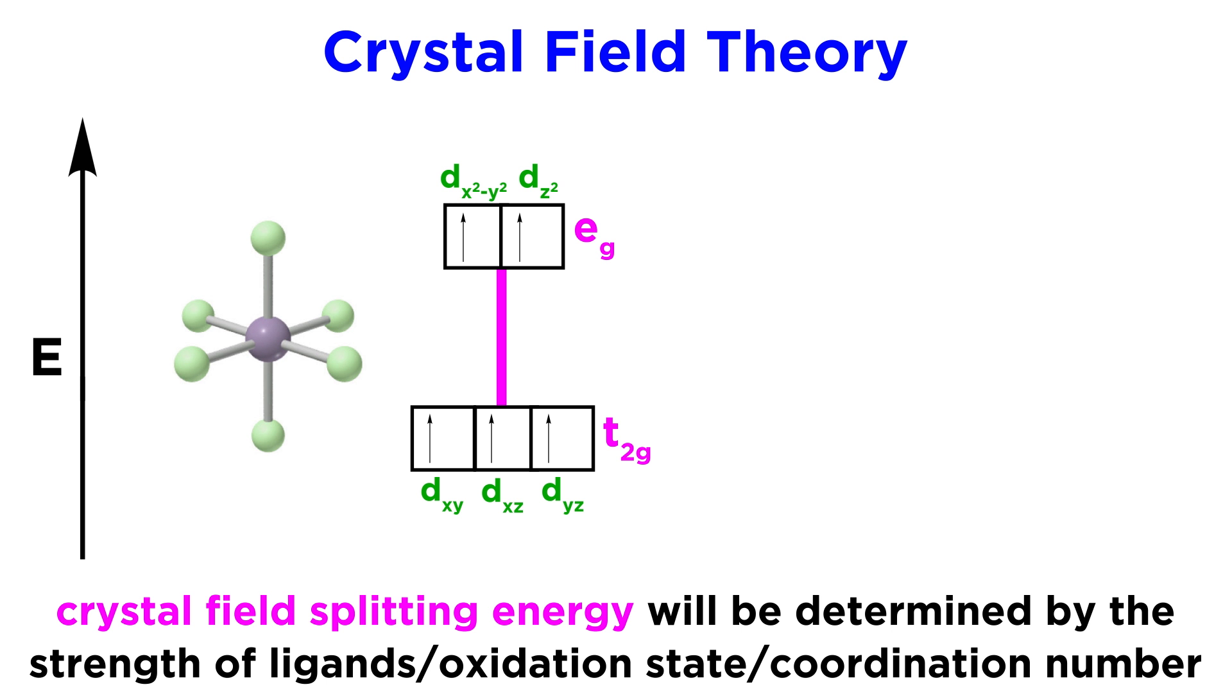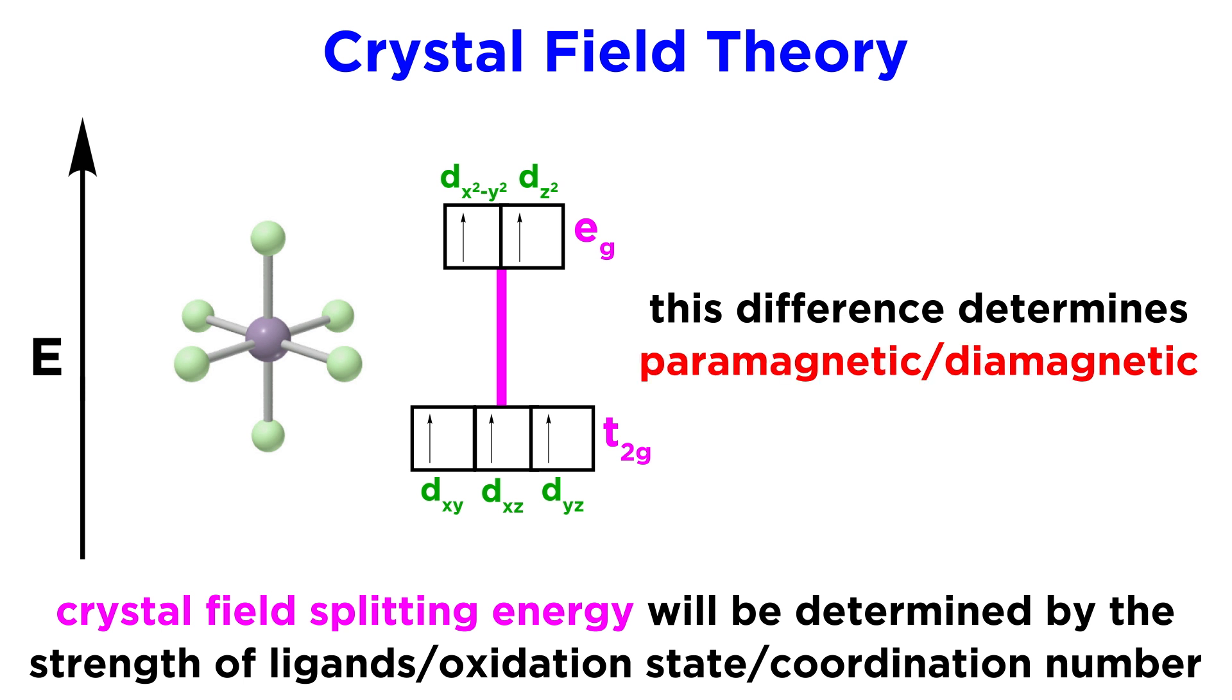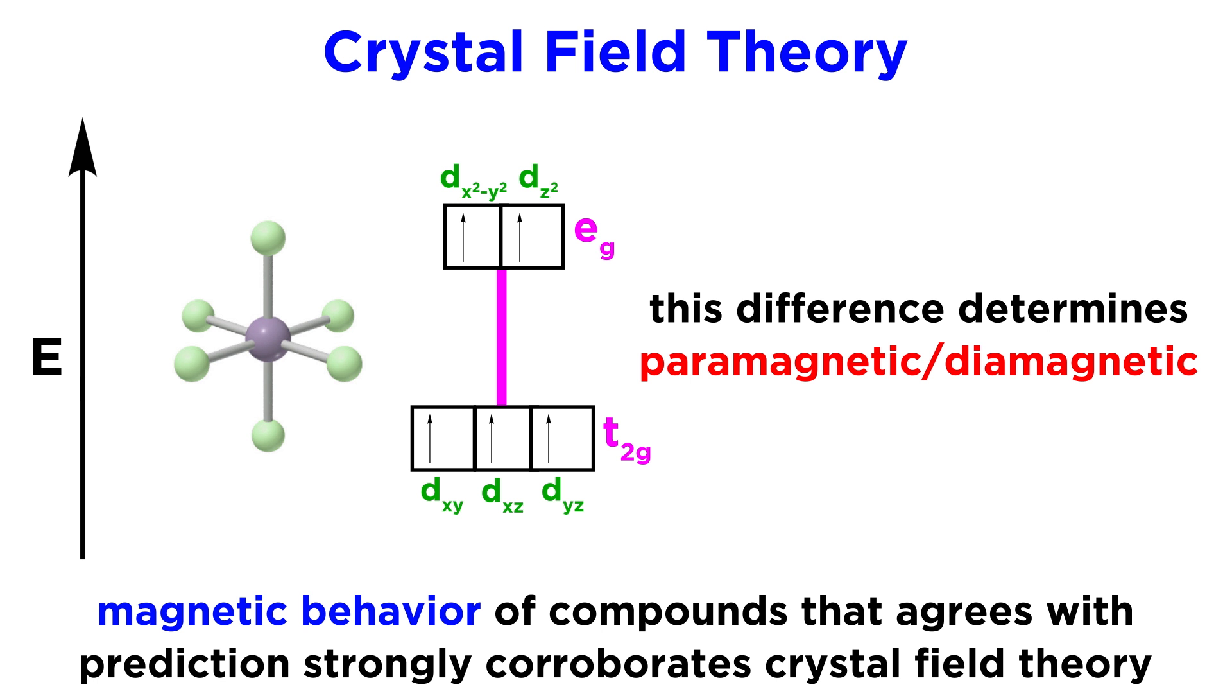The strength of the ligands surrounding the metal atom, along with other factors like oxidation state and coordination number, will determine the magnitude of the crystal field splitting energy, or the difference in energy between the T2G orbitals and the EG orbitals. This in turn will determine the electron configuration and thus other characteristics of the complex, such as paramagnetism versus diamagnetism, and the corroboration of the predicted magnetic behaviors of different coordination compounds is very strong evidence in favor of crystal field theory.